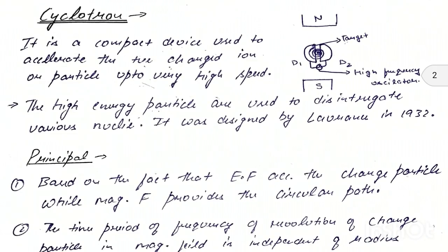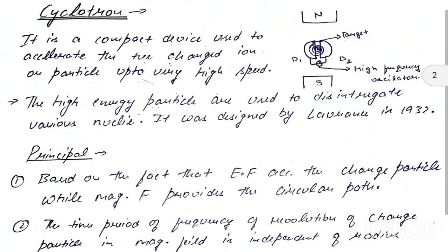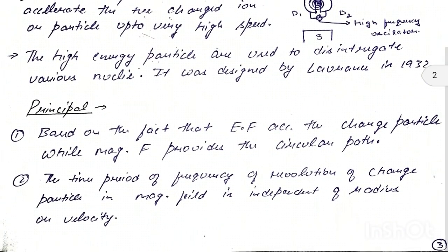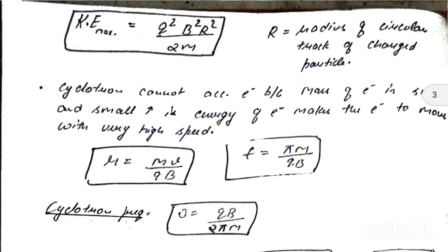The AC current's polarity periodically changes. If the positive charge particle is in D1 and D1 is negative, then D2 becomes negative at that time due to the AC polarity change — positive repels, negative attracts — so the particle moves a half circle into D2. This process continues until the positive charge ion reaches the target.